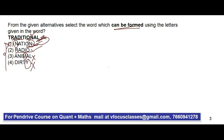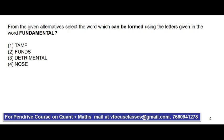So the only answer is RADIO. Now the second question: from the given alternatives, select the word which can be formed using the letters in the word FUNDAMENTAL. Go to the first option — T, A, M, E — you can find T, A, M, E in FUNDAMENTAL, so you can form TAME. The second option FUNDS contains S, but there is no S in FUNDAMENTAL. The third option DETRIMENTAL contains I, which is not in FUNDAMENTAL. So our answer is TAME.